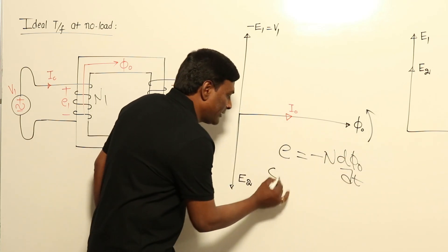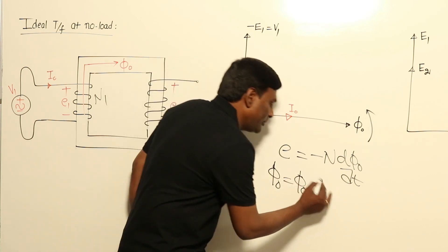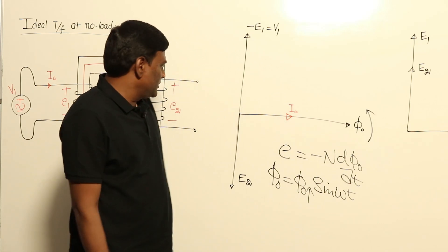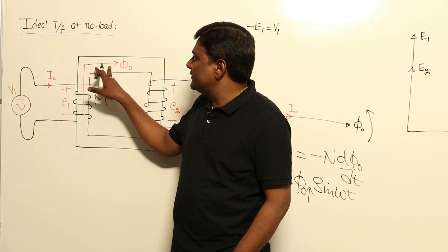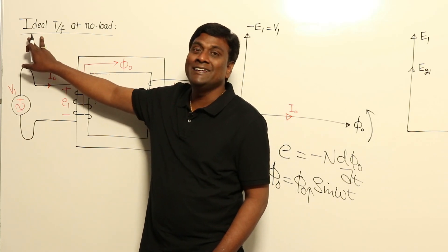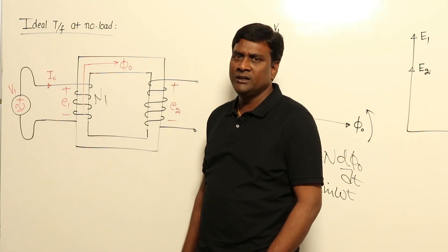Now let me take operating flux Φ0 equal to Φ0 max sin ωt - sinusoid function. That means if flux is sinusoid here, automatically if I consider very simple ideal machine - ideal machine in the sense linear - your network theory.